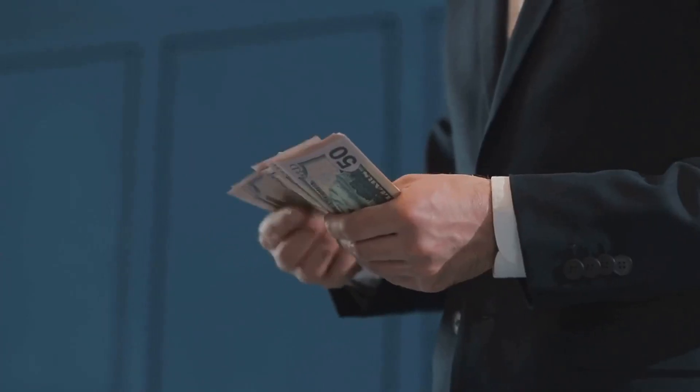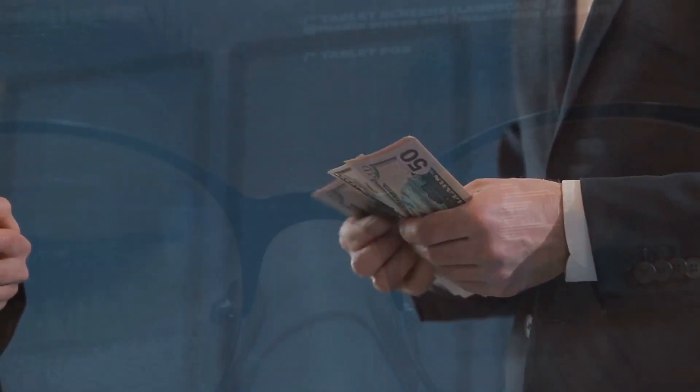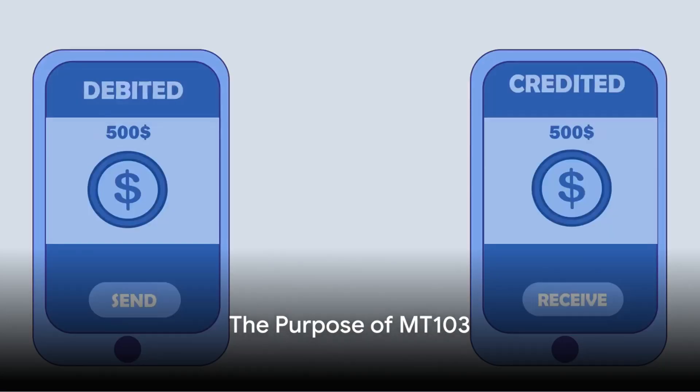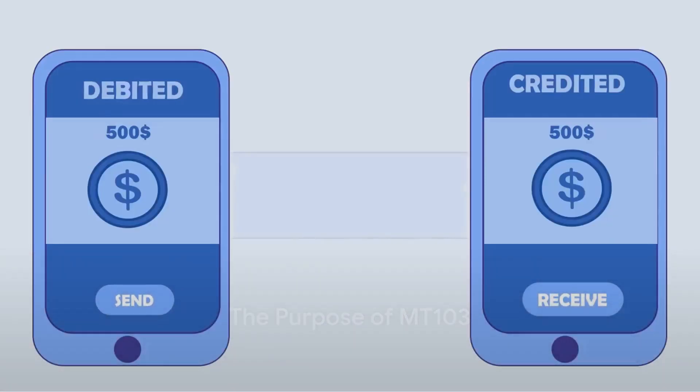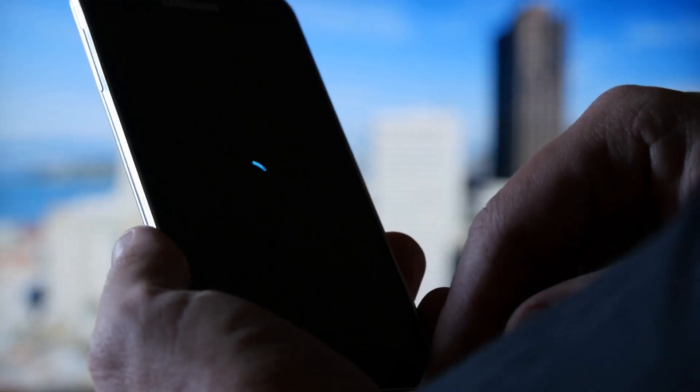In this case, it's all about single customer credit transfers. So what does this mean? Essentially, an MT-103 is a message used for sending money across borders.